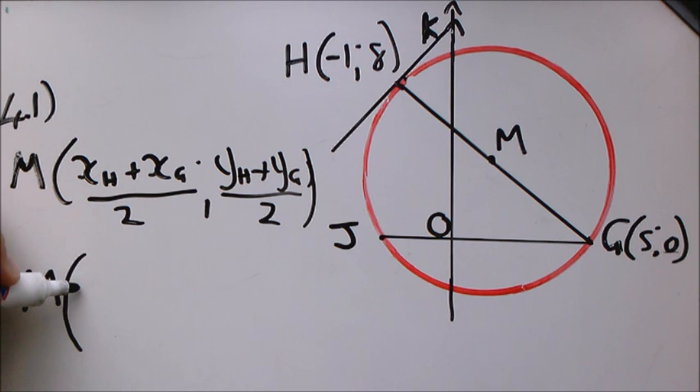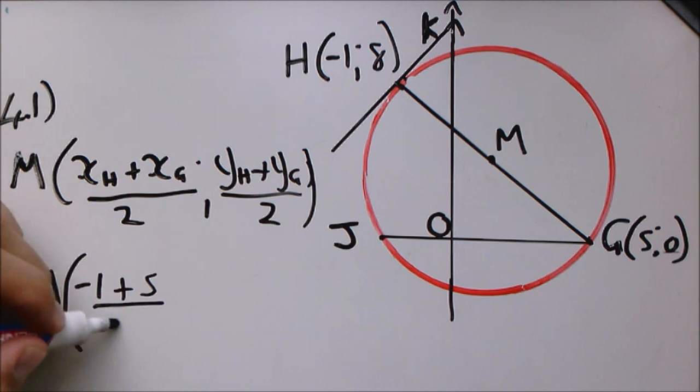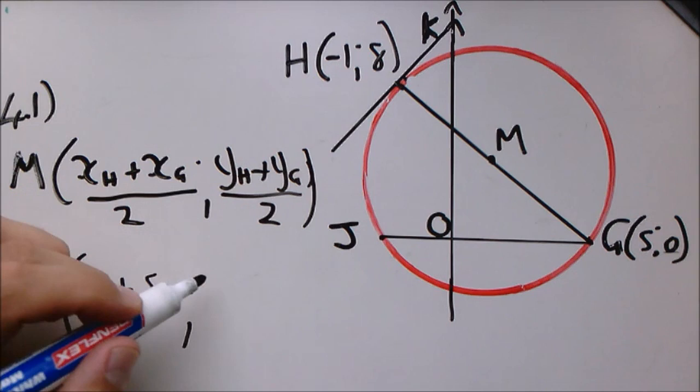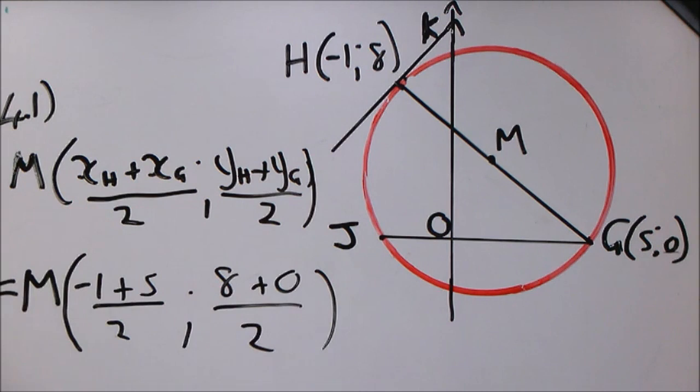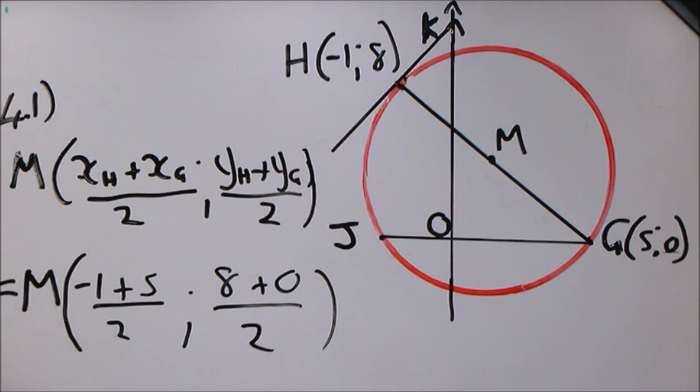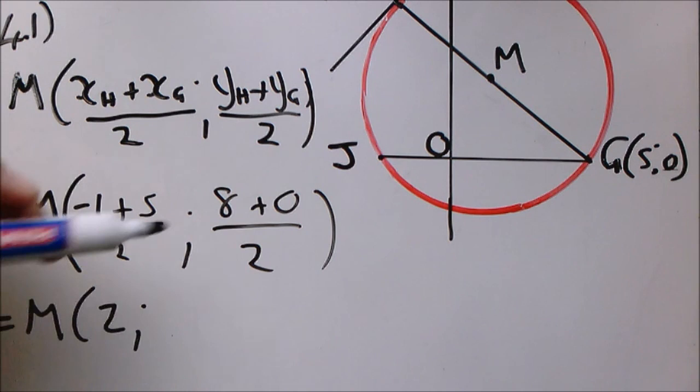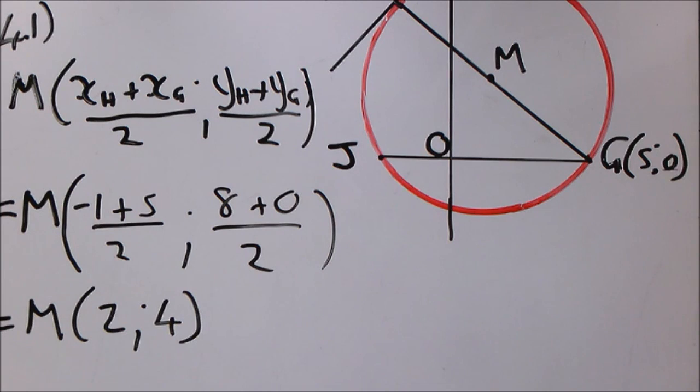So x for H is -1 and for G it is 5, and y for H is 8 and for G it is 0. Then we can calculate: -1 + 5 = 4, divided by 2 is 2. 8 + 0 = 8, divided by 2 is 4. Those are the coordinates for M.